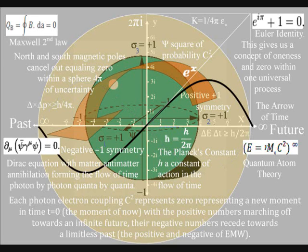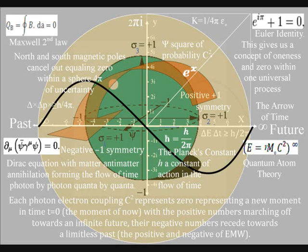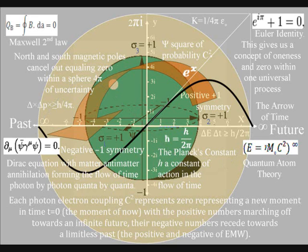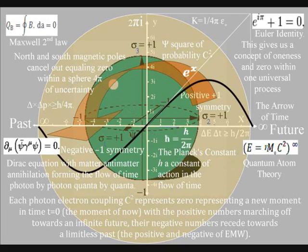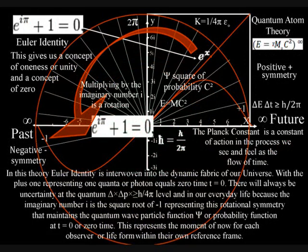In the top right hand corner of this diagram we have Euler's identity — the most beautiful equation to come out of the mind of man. But this beautiful equation has no meaning or purpose in modern physics. In this theory, Euler's identity is interwoven into the dynamic fabric of our universe, with the plus one representing one quantum or photon equals zero time, t equals zero, the moment of now. To understand this further we have to use the next diagram that shows how this spherical symmetry breaks, forming spiral symmetry that has line symmetry for the arrow of time.